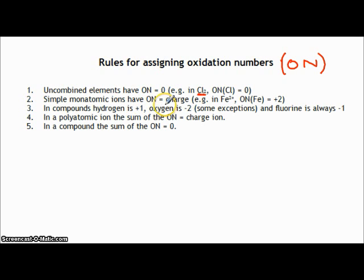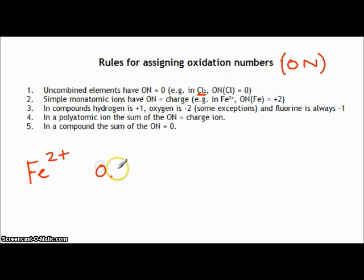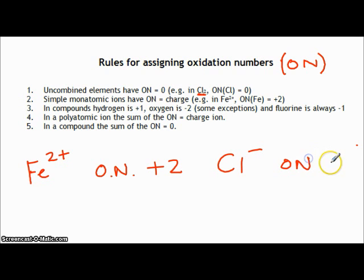For instance, if you have the Fe²⁺ ion, the oxidation number is plus two. Notice that we write the charge as 2+ — the number first, then the sign — whereas when we write the oxidation number, we write the sign first: +2. Simple monatomic ions have an oxidation number equal to the charge. For instance, Cl⁻ has an oxidation number of minus one because the charge is minus one.